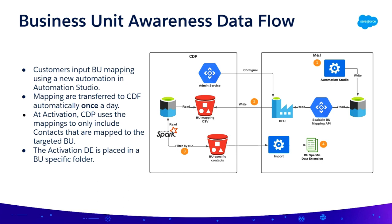Depending on the channel, you might already have a business unit context. For mobile channels we have a business unit context; for email channels we have a single all-subscribers list for the enterprise. This allows you to create a specific and explicit relationship — not just an implicit relationship based on filtering, but an explicit relationship which is then honored by CDP. The mappings are only transferred once a day, so if there are many changes to how business units and contacts are related, the end-to-end flow may take more than a day.